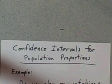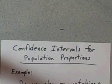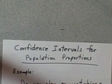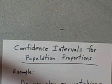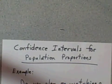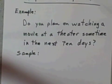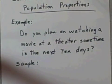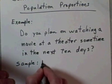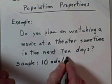Well, how can I go about finding that? I would decide to maybe get a sample of just say 10 adults chosen at random, and here's the question I'd ask them: Do you plan on watching a movie at a theater sometime in the next 10 days? And again, I'm saying that my sample is 10 adults chosen at random.